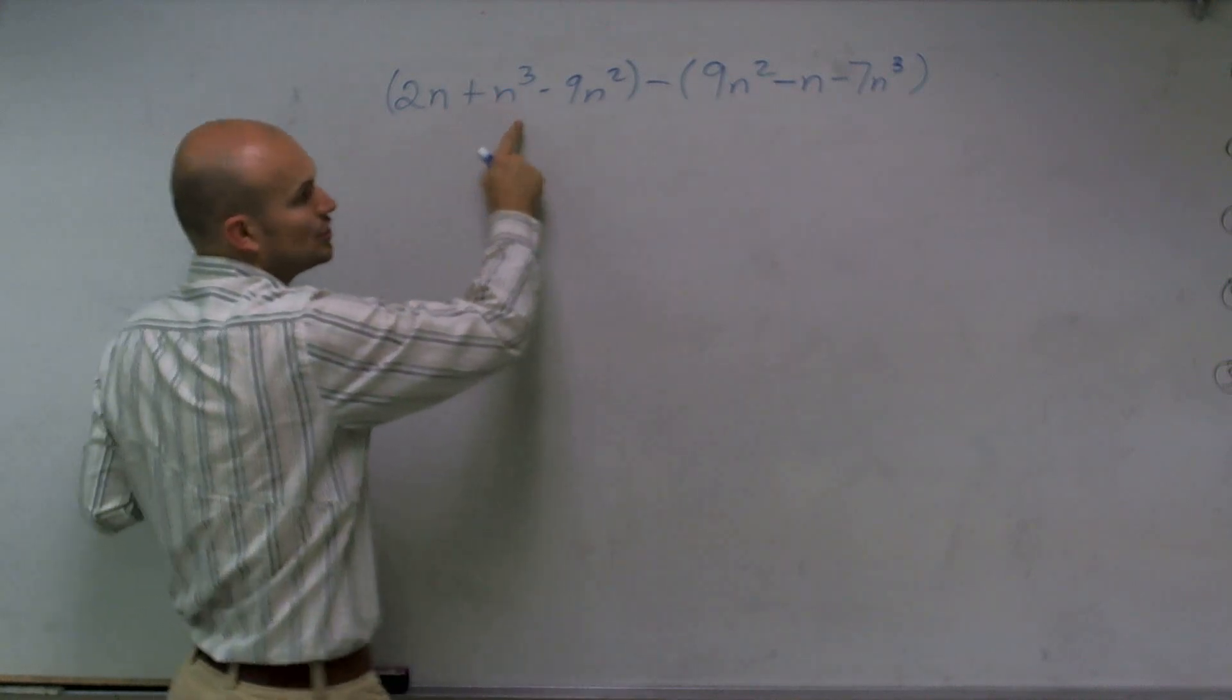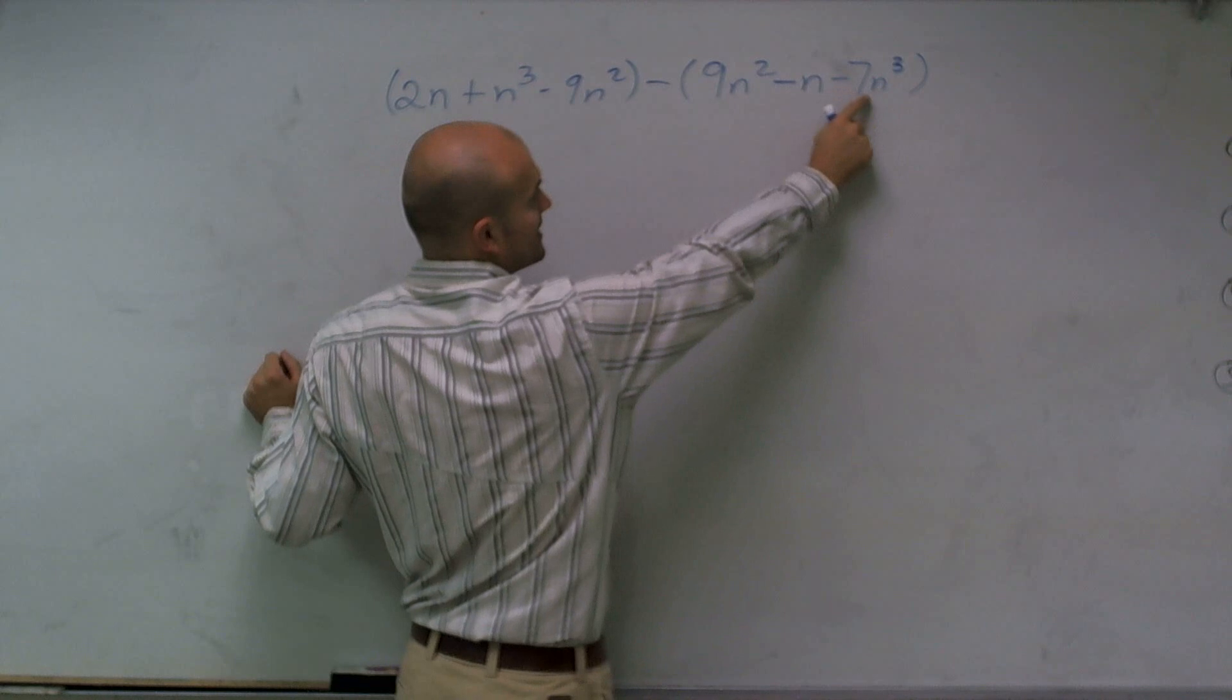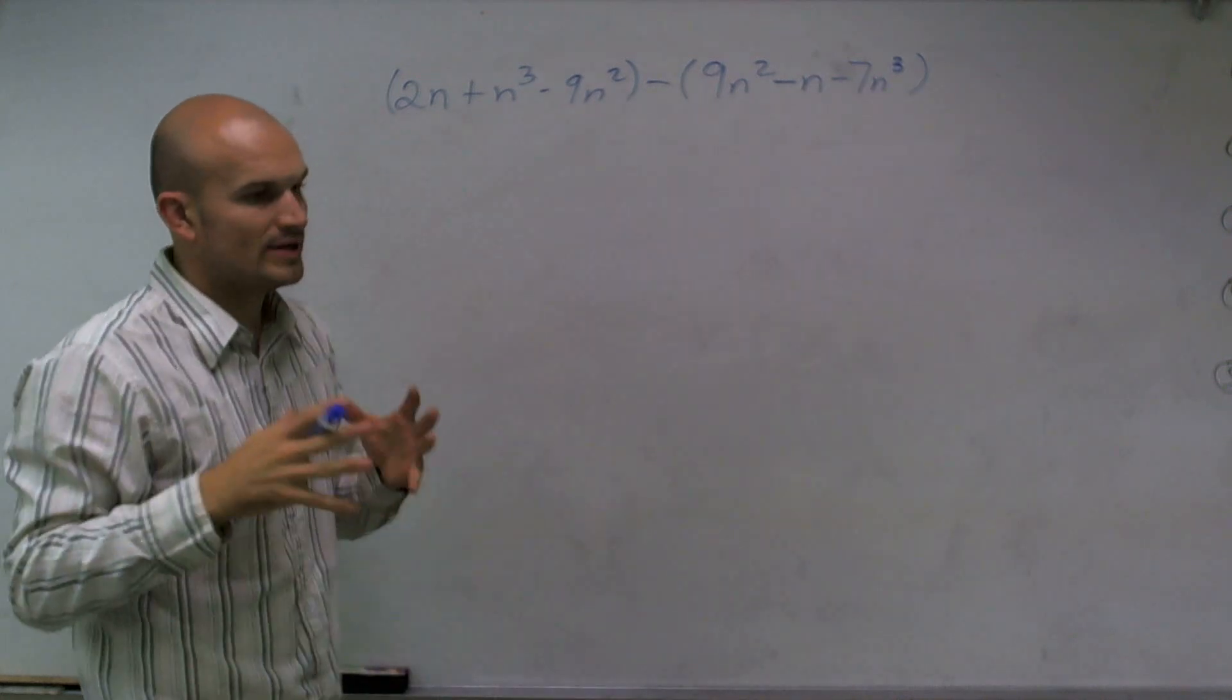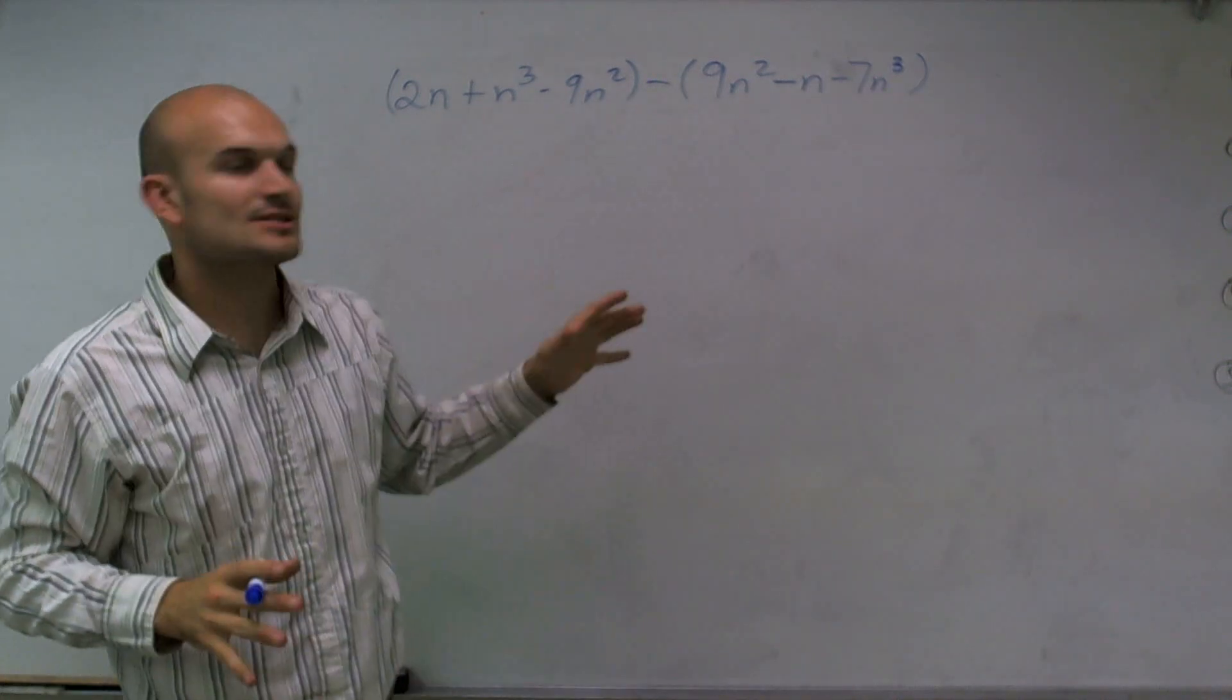I can only subtract my n cubed from another term, which would be a negative 7n cubed. So we can only subtract when they have the same base n and the same exponent.